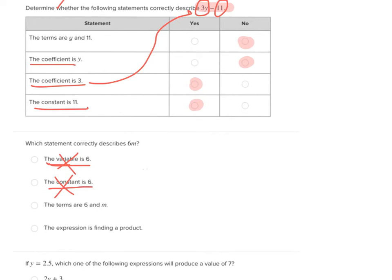The terms are 6 and m. No. Terms have to be separated by a plus or a minus, and those are not. The next one. The expression is finding a product. A product is an answer to a multiplication problem. Is that a multiplication problem? Yes. That's the answer.